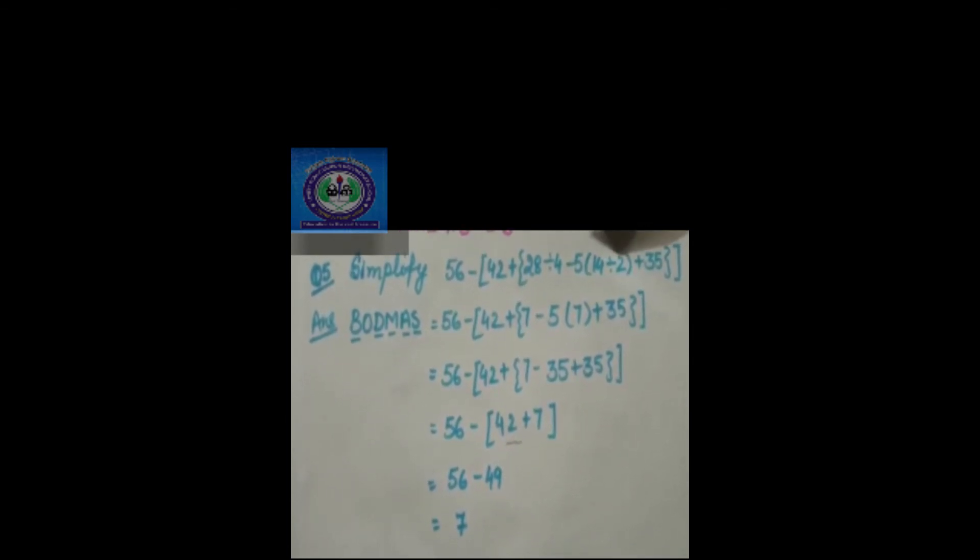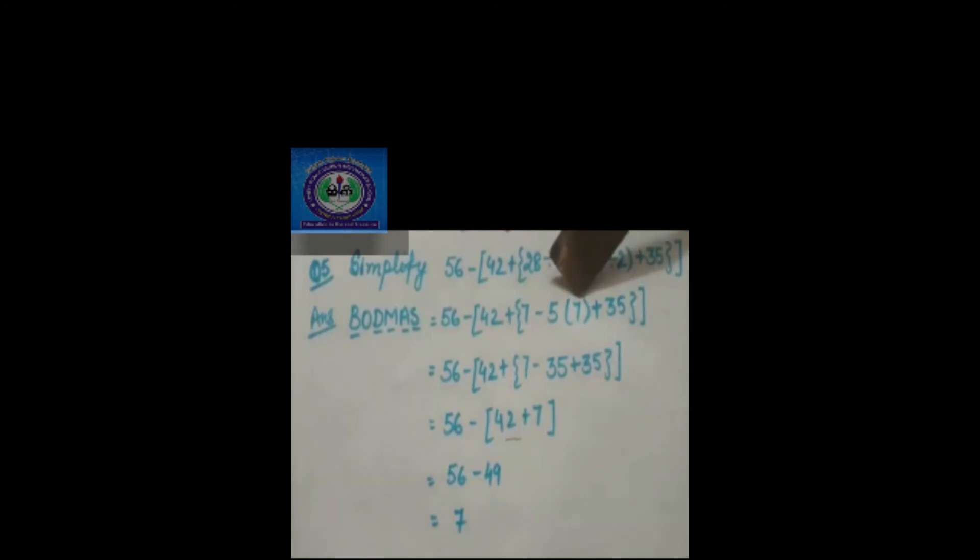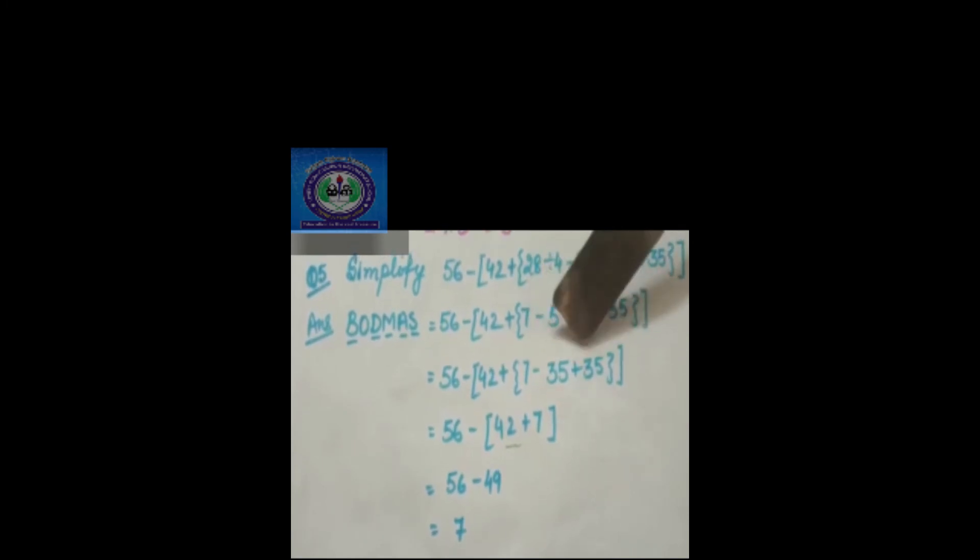When 14 divided by 2 you will get the answer 7. After that 7 multiplied by 5 you will get the answer 35. So 56 minus 42 plus 7 minus 35 plus 35. When there are two opposite signs with the same digit you will cancel it out.